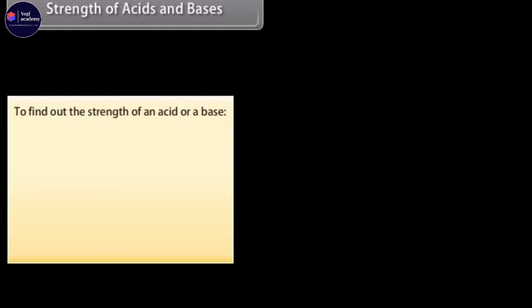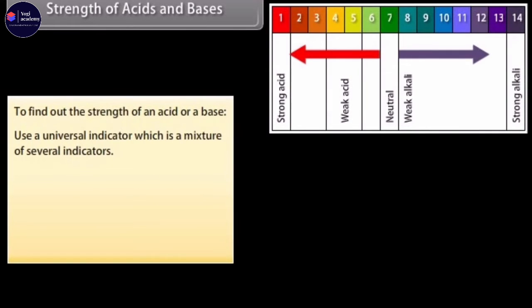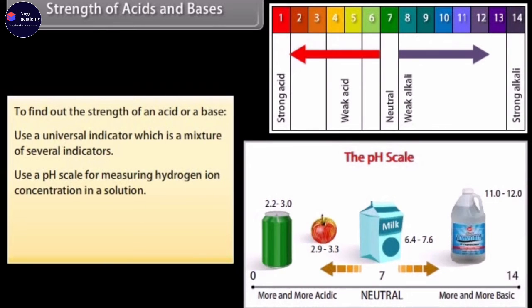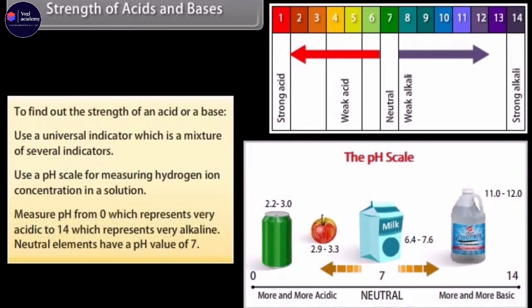You need to use a universal indicator to find the amounts of ions present in a solution or to find out how strong an acid or base is. The universal indicator is a mixture of several indicators. It shows different colors at different concentrations of hydrogen ions in a solution. A pH scale is a scale of measuring hydrogen ion concentration in a solution. You can measure pH from 0, which represents very acidic, to 14, which represents very alkaline. Neutral elements have a pH value of 7.